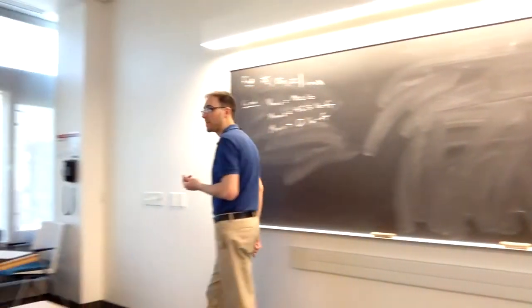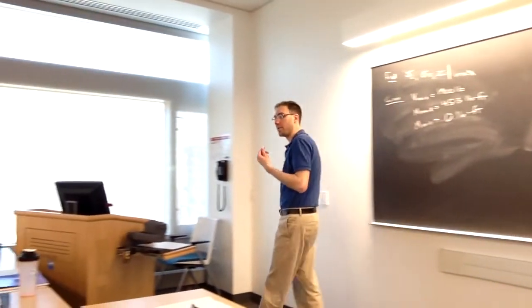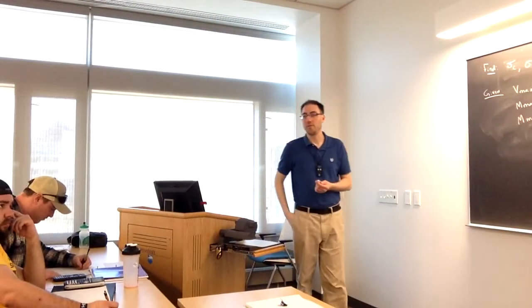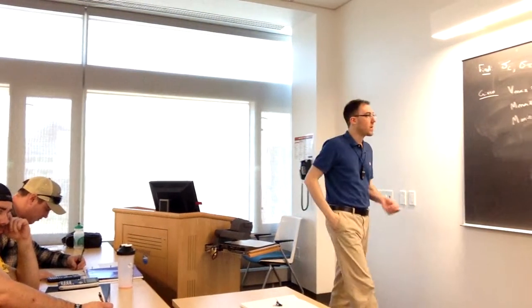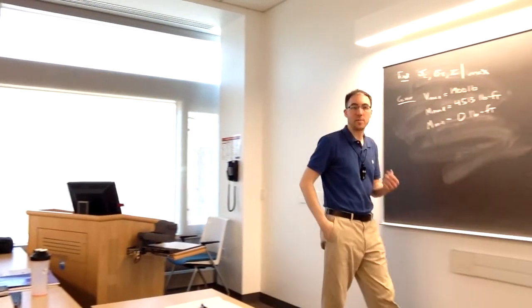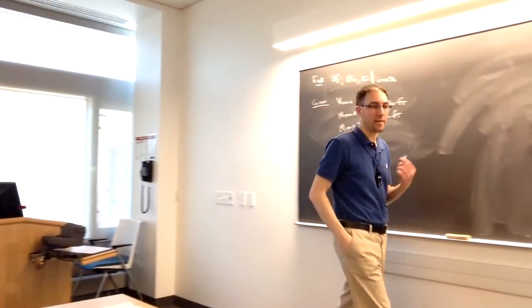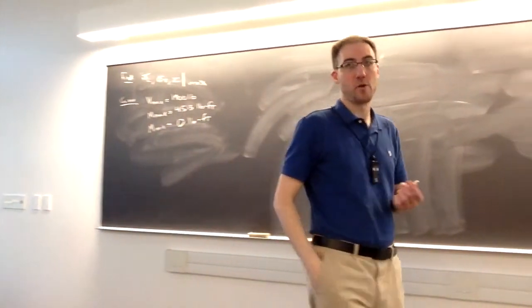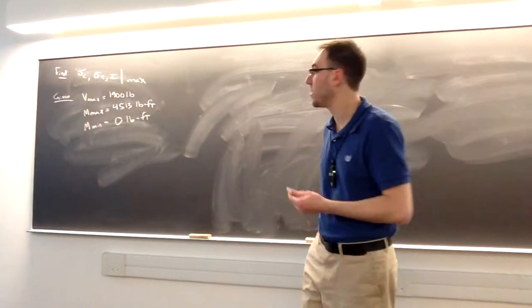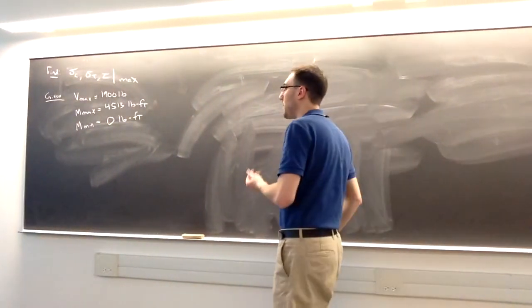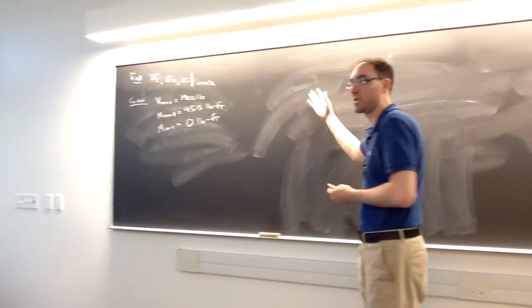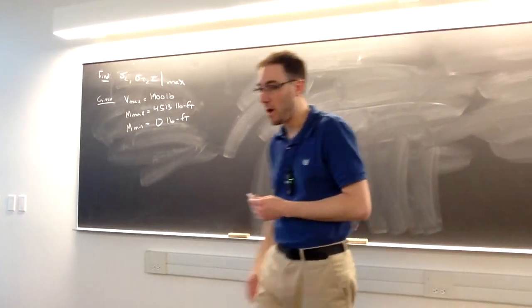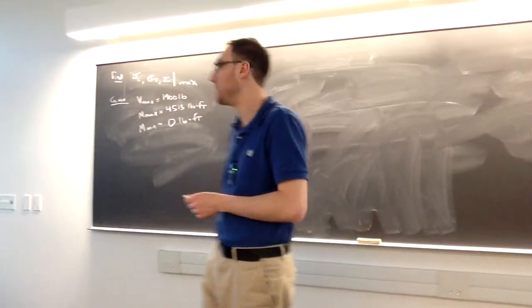To find the stresses, we need to use MY over I and VQ over IB. So in both cases, we need to find the value of I, the moment of inertia for the shape. That's probably the best place to start so we can use it for both parts of the problem.